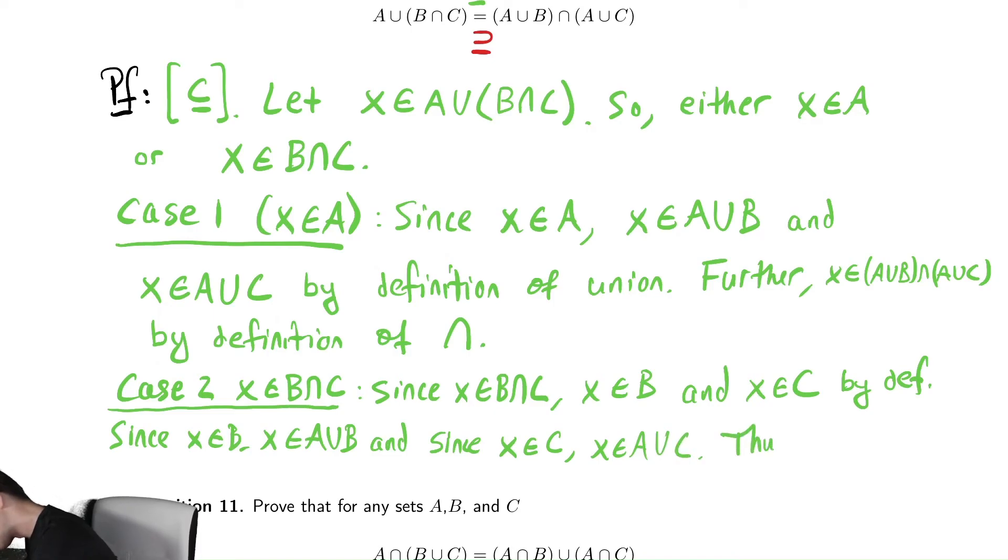Thus, x is in the intersection of those two sets because it's in both of them. So, it's in A union B intersect A union C. So, what we've done is we've said there was two options. Either it was in A or it was in B intersect C. In either case, x was in A union B intersect A union C.